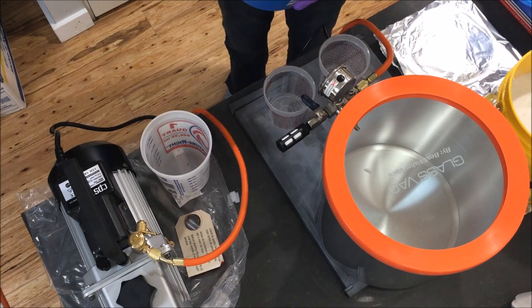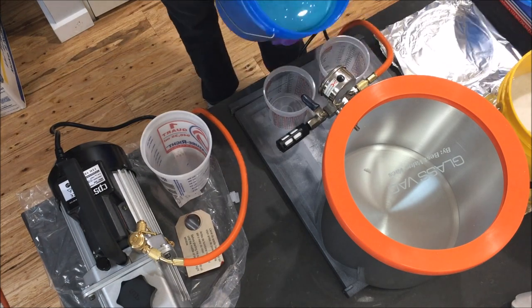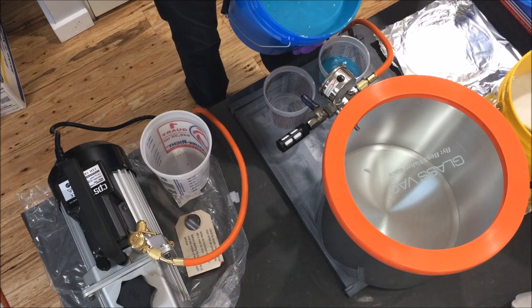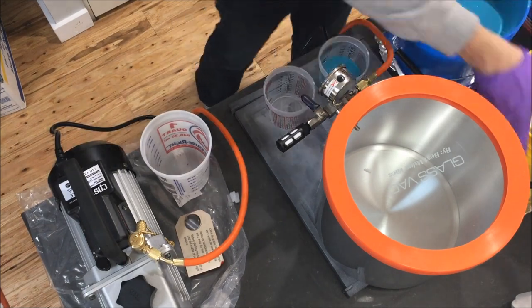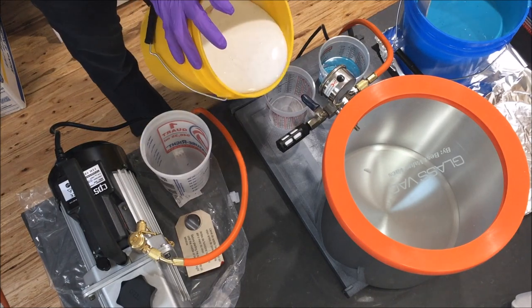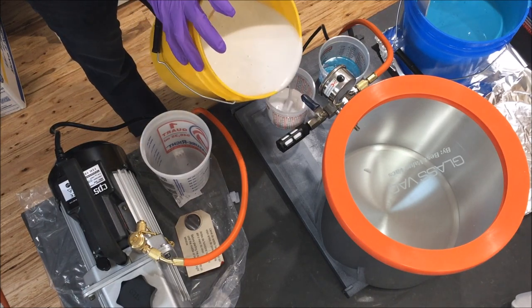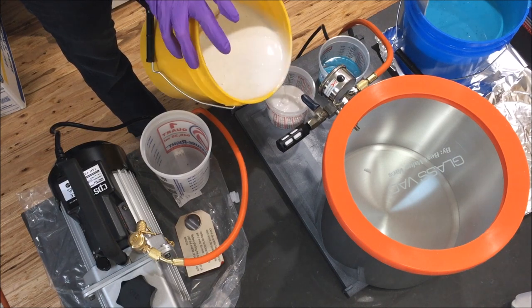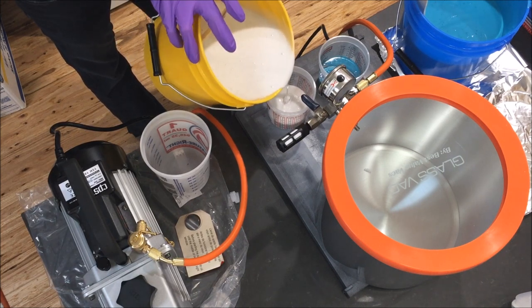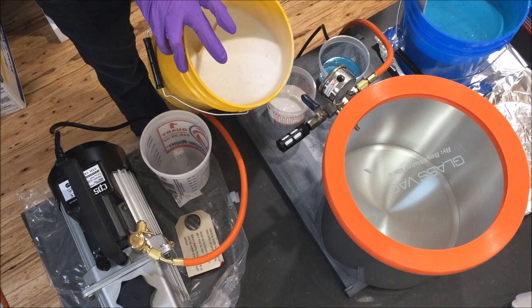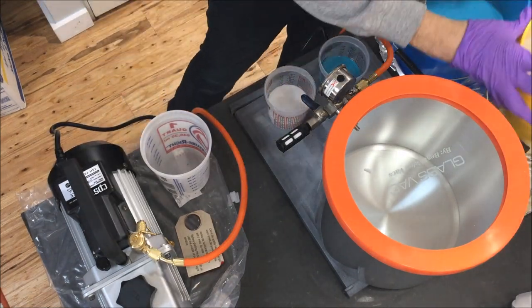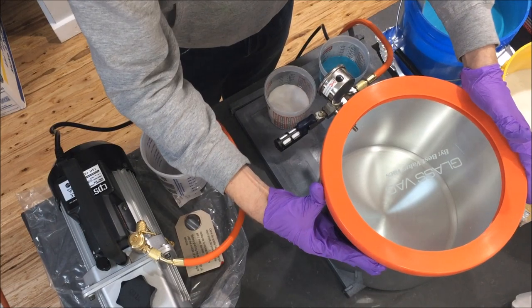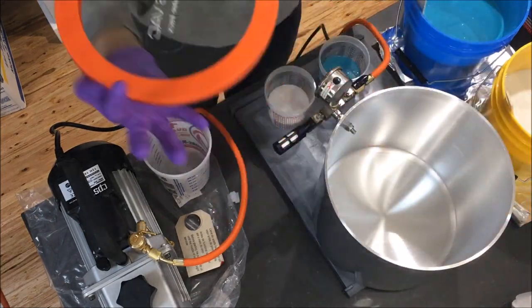And now for the fun part, making the actual mold. For this I am using Moldstar 16 Fast, which is probably not the most ideal thing to use if you're going to use a vacuum chamber just because it cures so quickly, but it's all I had. So I poured the two parts—just like most everything, it's one part A to one part B—I poured those out into two cups and then threw those in the pot before mixing it.